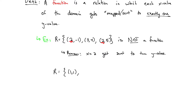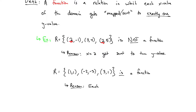Think of a function as a machine. It takes in one input and needs to spit out one output. It can't send x to two different things. If I give you the relation {(1, 1), (-2, -3), (3, 1)}, this IS a function because each x value got mapped to exactly one y value. Yes, x = 1 and x = 3 both got sent to y = 1, and that's fine. Multiple x values can go to the same y value.